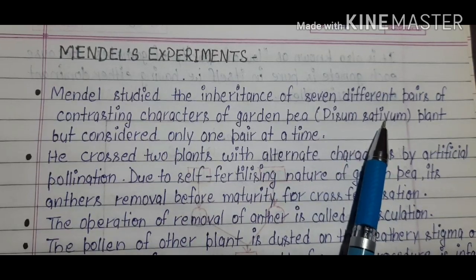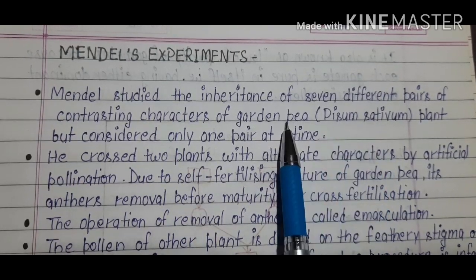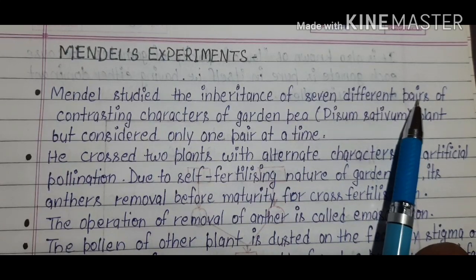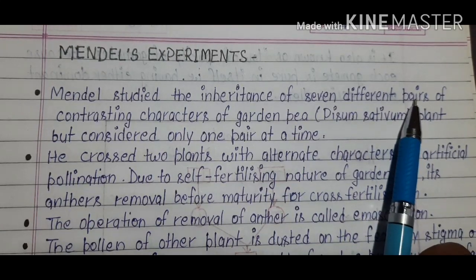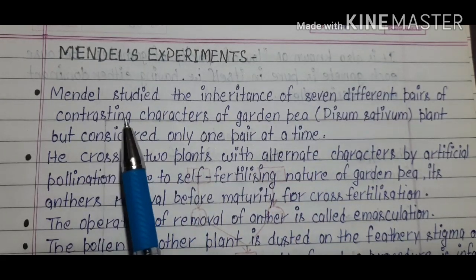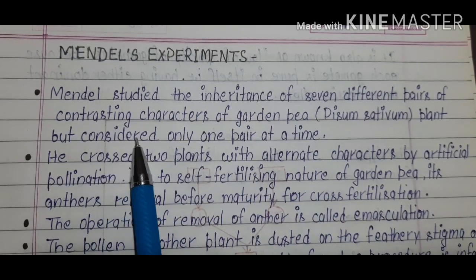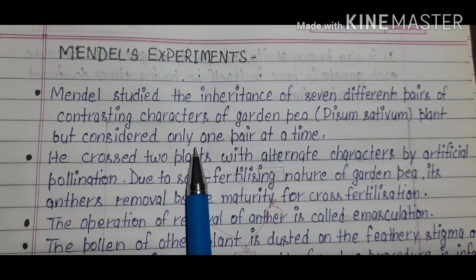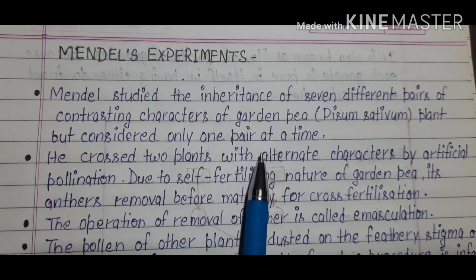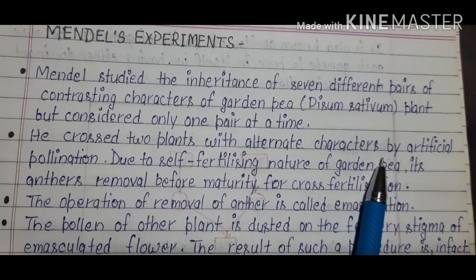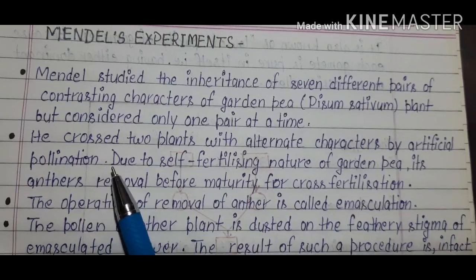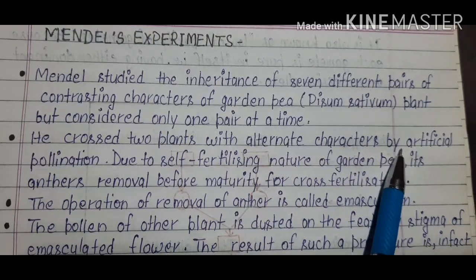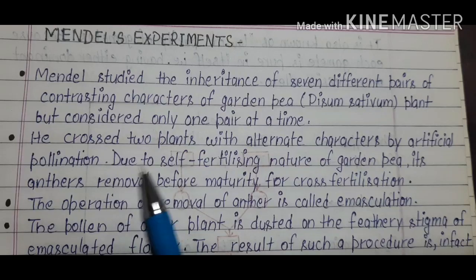Mendel used Pisum sativum — garden pea plants. These plants had seven different pairs of contrasting characters. He considered only one pair at a time and crossed two plants with alternate contrasting characters using artificial pollination.